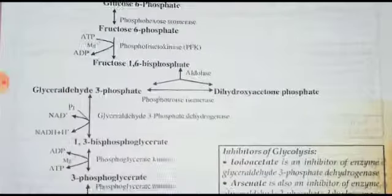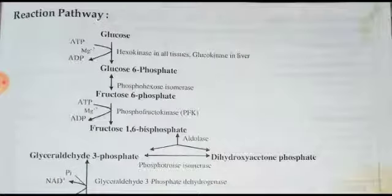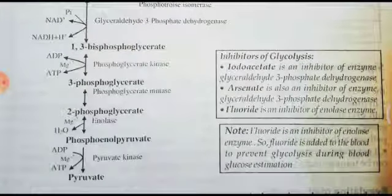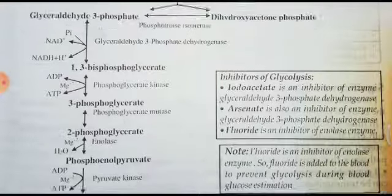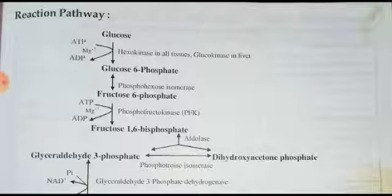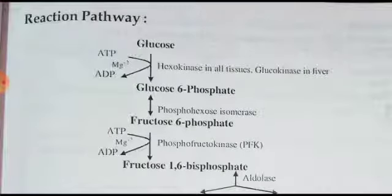Let us see the pathway in detail. The starting material is glucose and the ending material may be pyruvate or lactate. In aerobic conditions, pyruvate is the end product. The pathway up to pyruvate is independent of oxygen — it is only after pyruvate formation that, depending on the presence or absence of oxygen, it is converted either to acetyl-CoA or lactate.